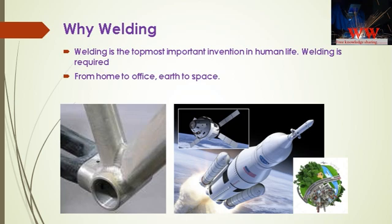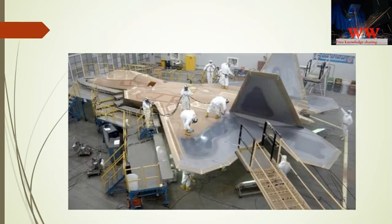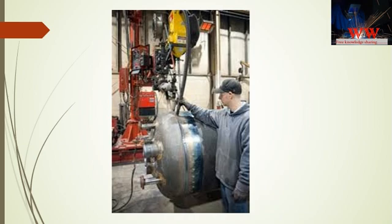Welding is a huge field. We find welding work done in households — for example, furniture and kitchen utensils — all the way to space, where it is predominantly used in rockets, spacecraft, and satellites. The F-22 Raptor plane is one example where extensive welding work has been done. This is an example of a pressure vessel where SAW is used for circumferential seam welding.